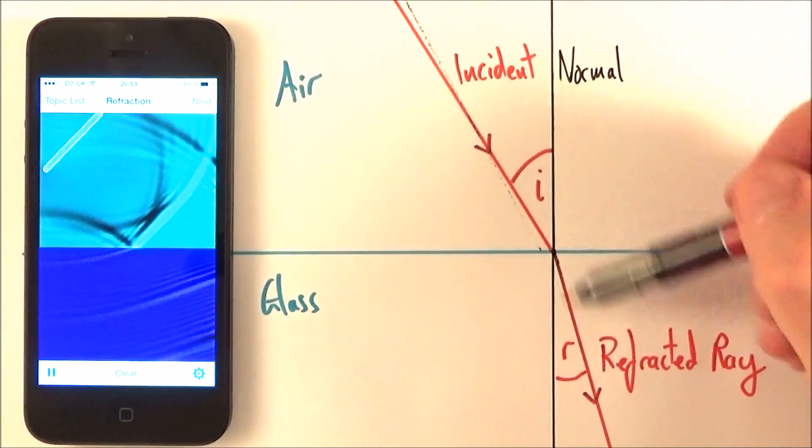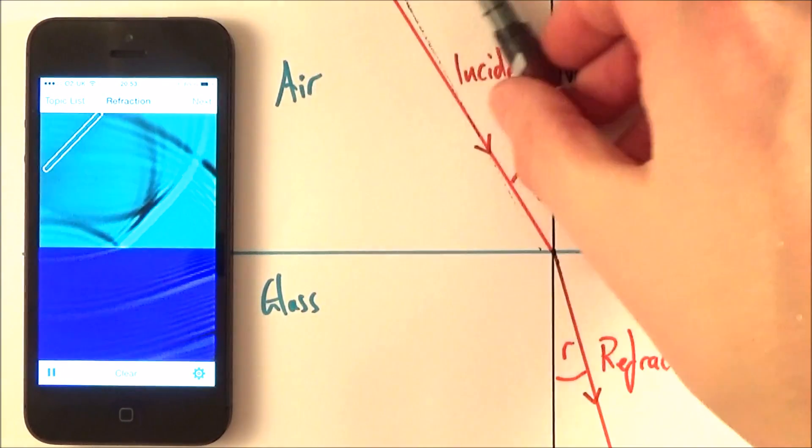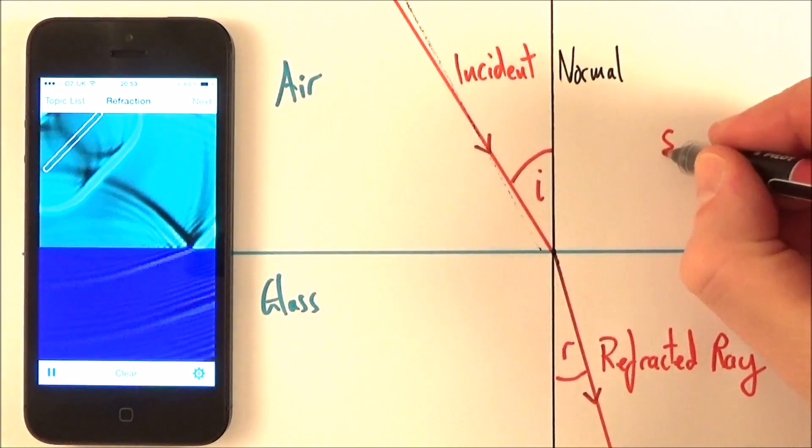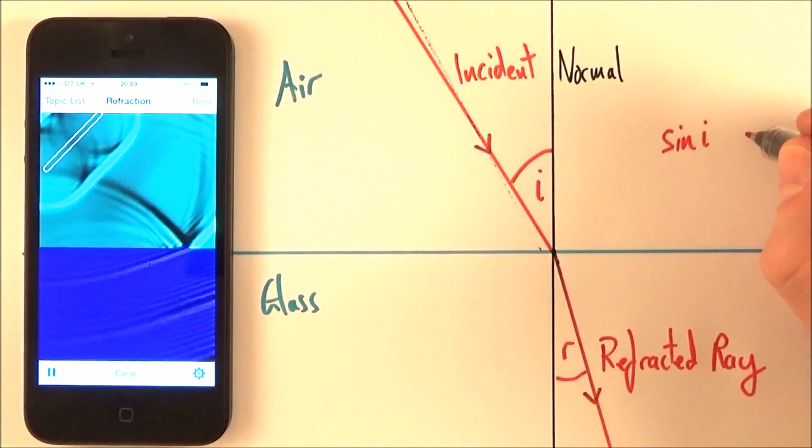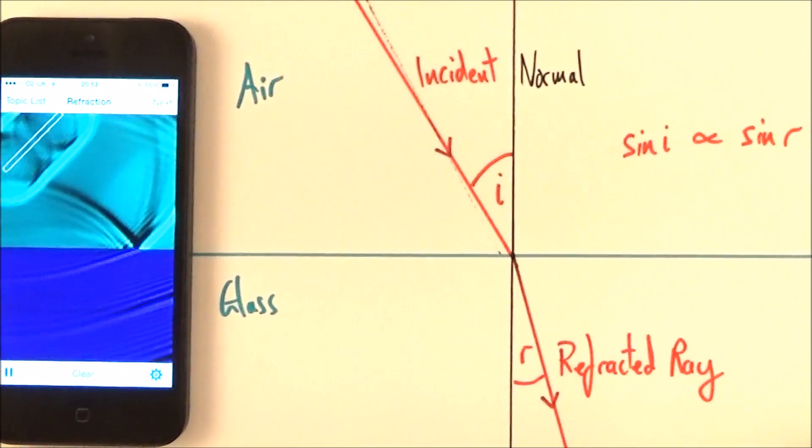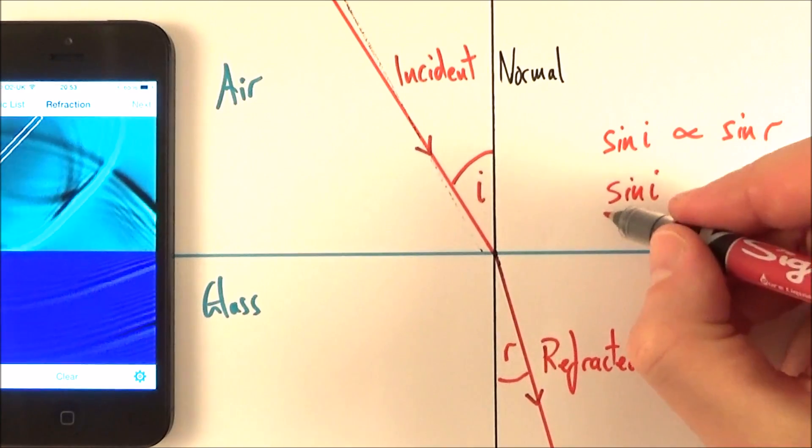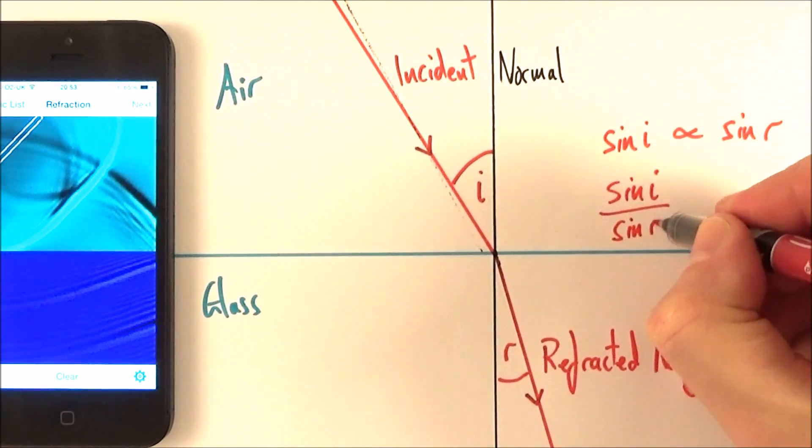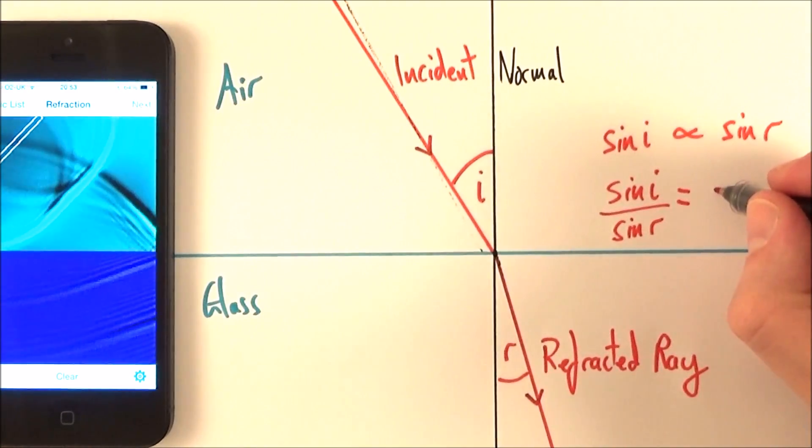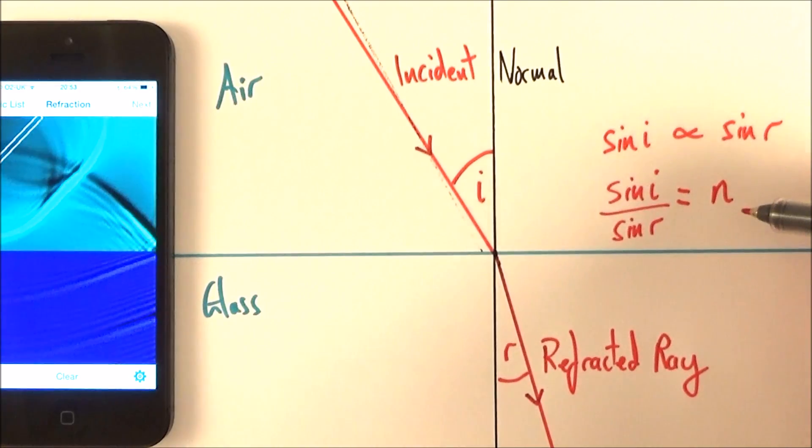Now if we measure i and r, and we can sort of measure these for a whole variety of angles of incidence, what we can then do is work out the relationship between the two. And what we find out is that sin i is proportional to sin r. Now we can write this as sin i, or sine of the angle of incidence, divided by sine of the angle of refraction is equal to a constant. And we call this constant little n. And this little n here is what we call the refractive index.